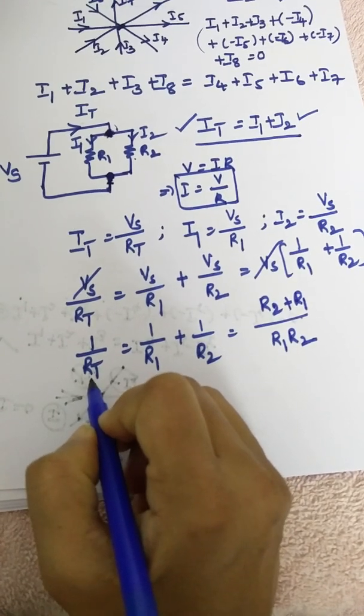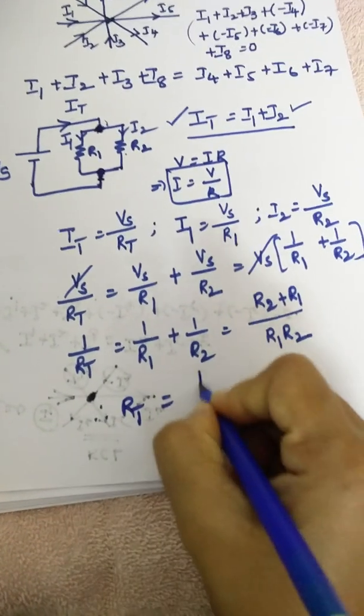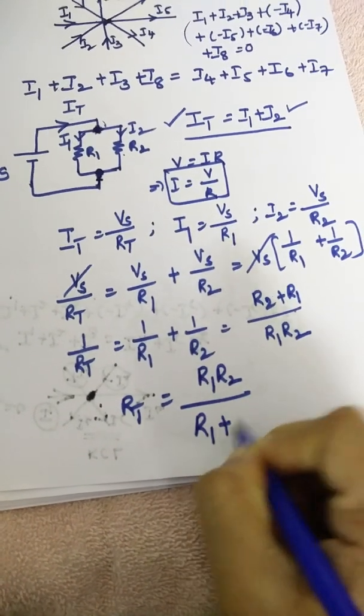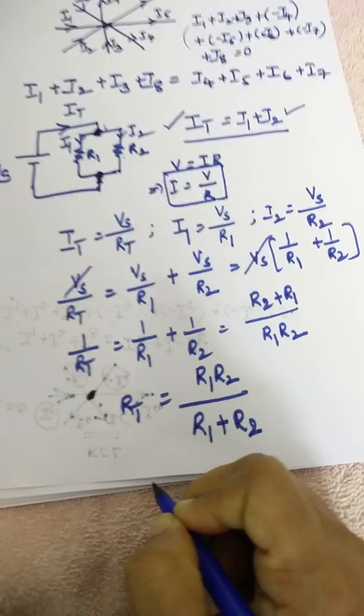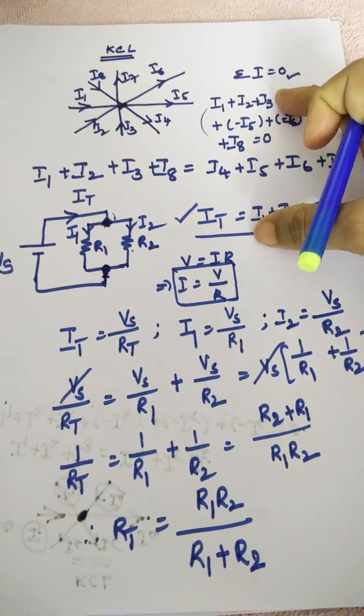So this is 1 by Rt. But we want Rt. So therefore, what is Rt? This is R1 R2 by R1 plus R2. So up to here, this is case here.